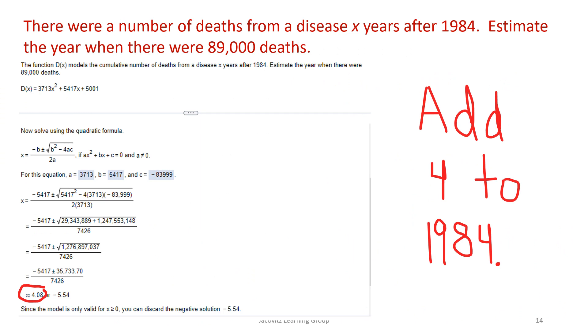For the last problem here, this equation in the textbook asks you to solve the function for cumulative number of deaths from disease x years after 1984. Estimate the year that there were 89,000 deaths. This comes off as if they're trying to set it up as if it's a derivative, but you're just doing straight quadratic. Your a term is 3,713, b term is 5,417, c term is 5,001. It is ugly, ridiculous. Hopefully when you take the teacher test, nothing is this awful, but students have this in an algebra book.